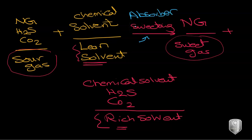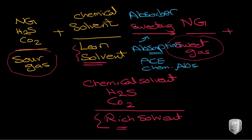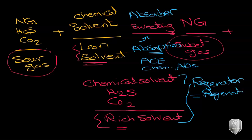For the Aspen HYSYS expert exam, this will be a chemical absorption occurring in an absorber. After that, the rich solvent will be regenerated in the regenerator — removing the H₂S and CO₂ — giving you back clean chemical solvent. The rest of the process and the PFD will be discussed in the next video.